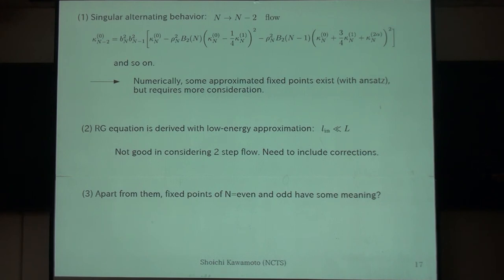And the other thing is that this N to N-2 flow is given by just repeating the previous one-step flow. But, in that case, the low-energy approximation is not very good. So, we actually need to take into account some corrections when we first consider the low-energy approximation. This is actually what we are now working on.